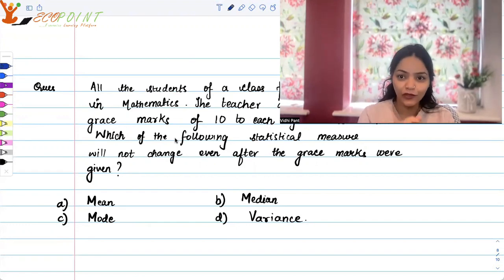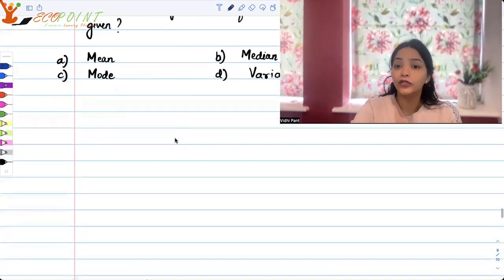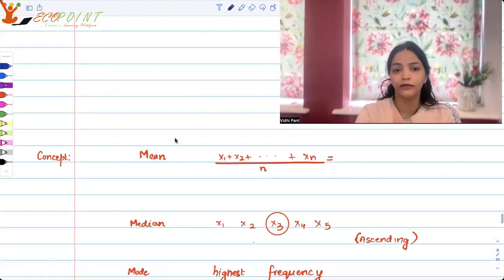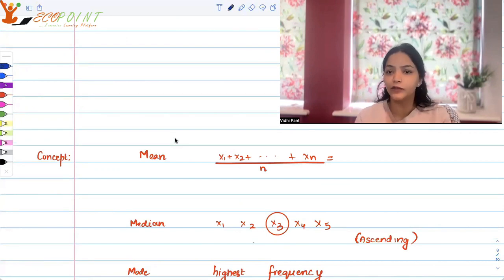With what we have just learned, I think all of you must be thinking about variance, right? Variance will not change for sure. So if I'm in a hurry and I know about that variance will not change, I can easily mark it up. Otherwise I should know the concept of mean, median, mode and variance.